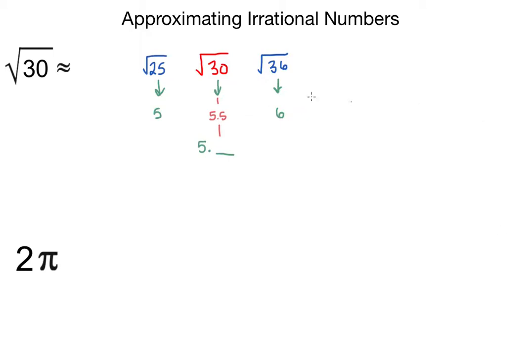The way we can identify whether the square root of 30 is closer to six or closer to five is by identifying whether the number 30 itself is closer to 36, which in this case it's six away.